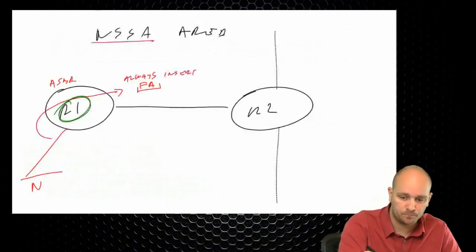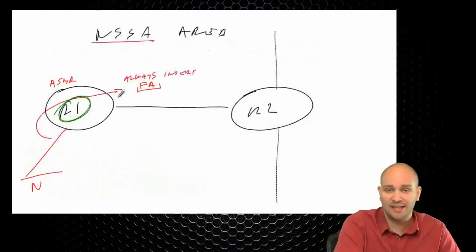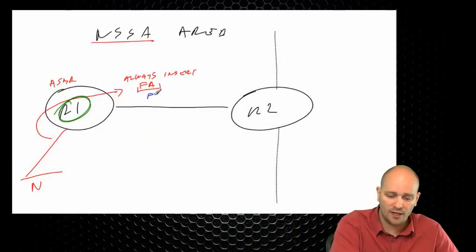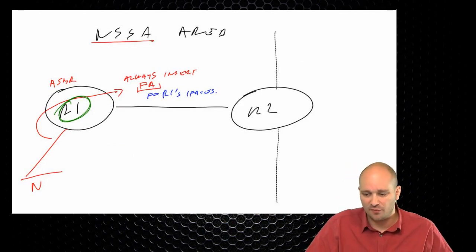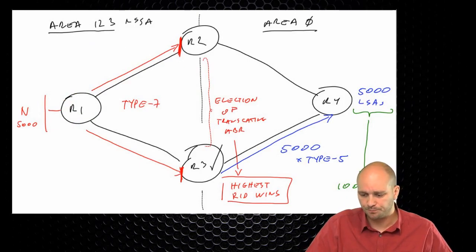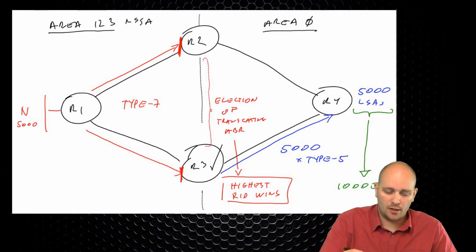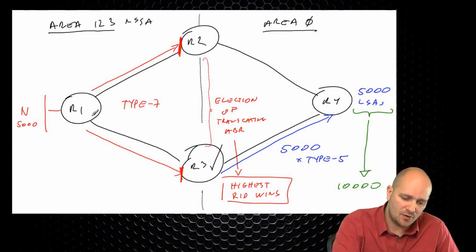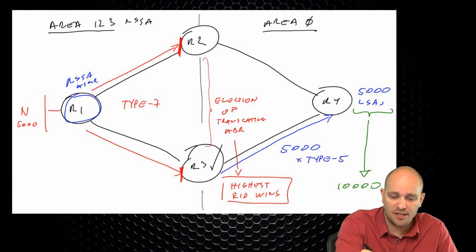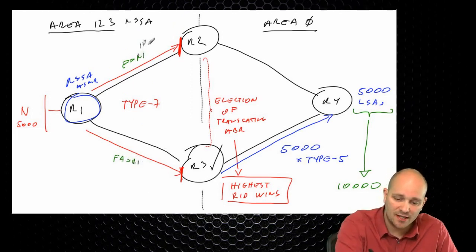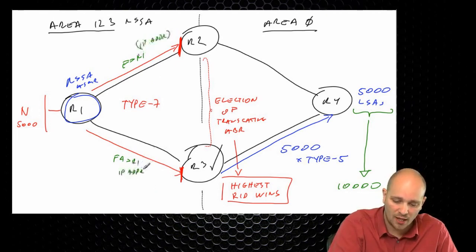When this router R1 — an NSSA ASBR — injects routes into OSPF and generates type 7 LSAs, the forwarding address will be one of R1's interfaces. Looking at our previous example, this NSSA ASBR actually injected the forward address of R1. This is an actual IP address that is inserted, not a router ID.